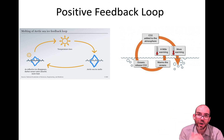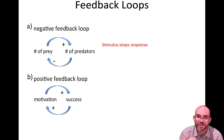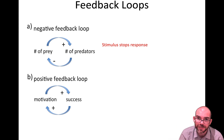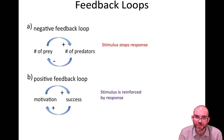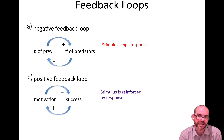Looking at both types: a negative feedback loop is when a stimulus can stop a response — for example, the number of predators goes up, prey decreases, and with fewer prey the predators have nothing to eat so they decrease too. The stimulus stopped it. With a positive feedback loop, the stimulus is reinforced by the response — success reinforces motivation and motivation reinforces success. I hope this short video was a helpful introduction into feedback loops in the endocrine system, and I'll see you next time.